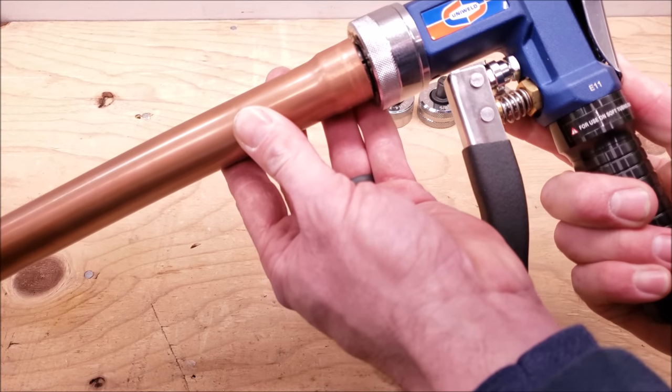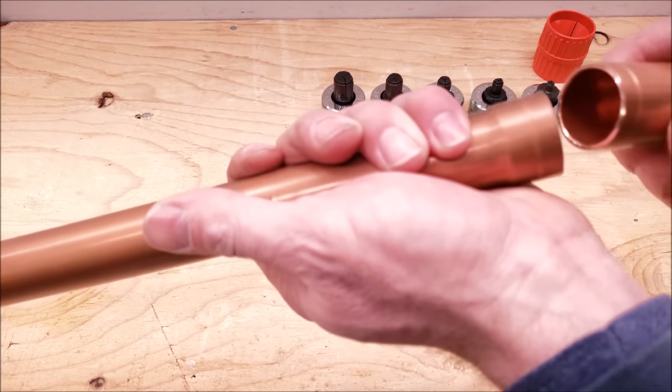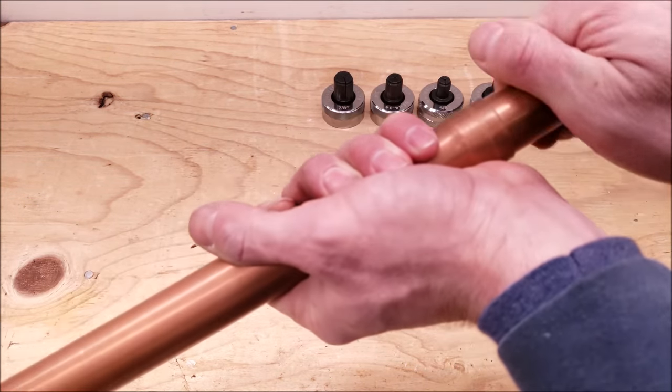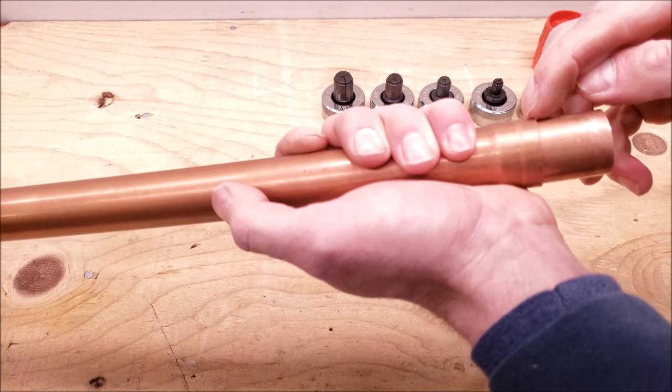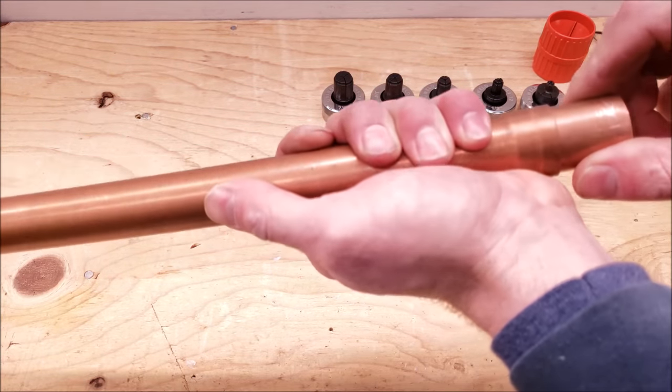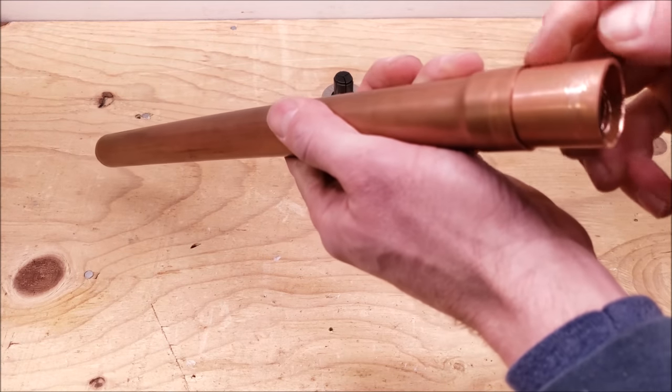All right, let's try that. So we'll go ahead and put our tubing in. You see it's real nice and tight, and that's what you want. You want to make sure it's snug and not wiggling around because that would mean that the swedge is too big.